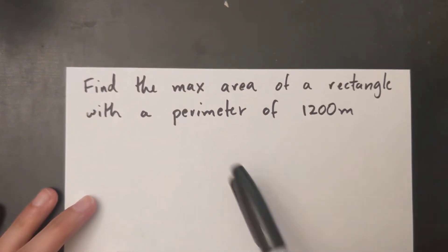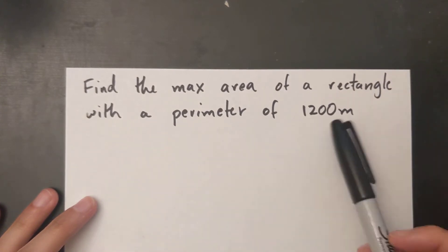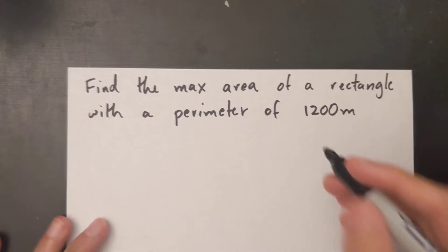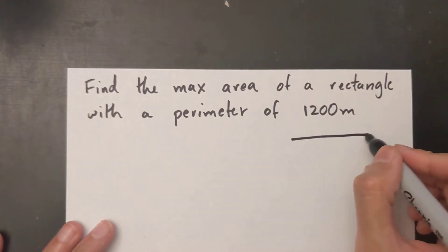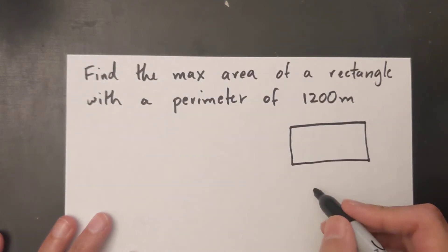All right, so in this problem it asks us to find the max area of a rectangle with a perimeter of 1200 meters. So let's draw a rectangle here. Now this rectangle can be this wide or it can be...